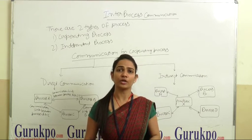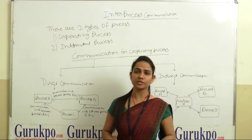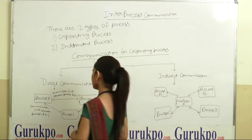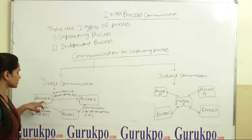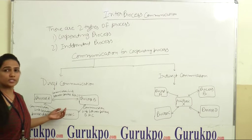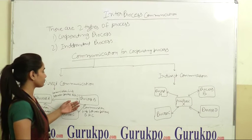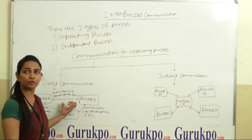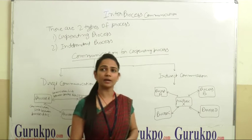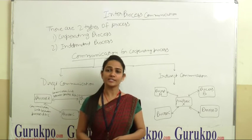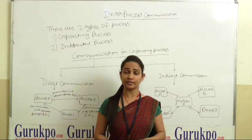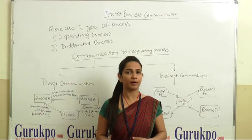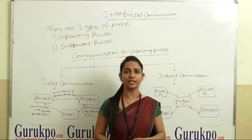In direct communication, when processes want to communicate with each other, there exists a direct link between the processes. As we can see here, there are three processes: process A, B and C. When process A wants to communicate with process B, there exists a direct link between both the processes. Whereas in indirect communication, there does not exist any direct link. If processes want to communicate with any other process, it needs a third party, and that third party is the mailbox.